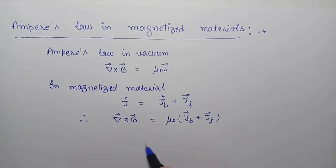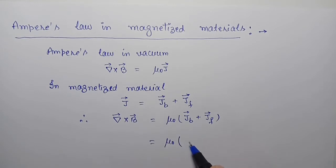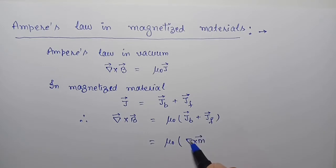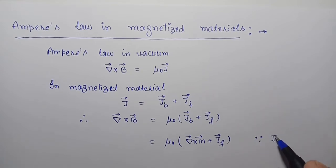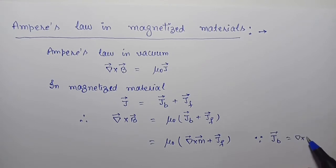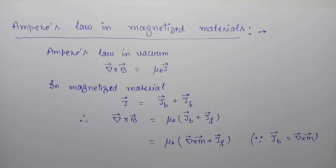Further, the bound current j_b can be written as del cross M. This is because the bound current equals del cross M, where M is the magnetization.